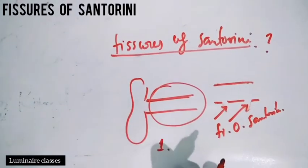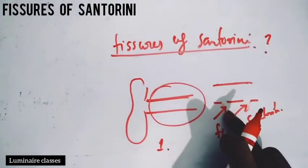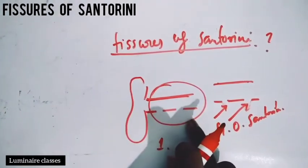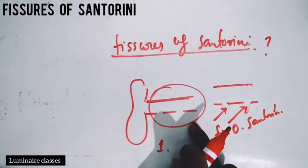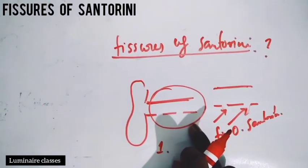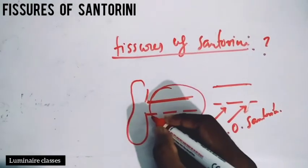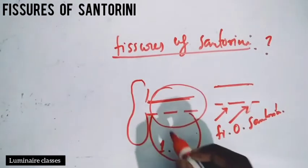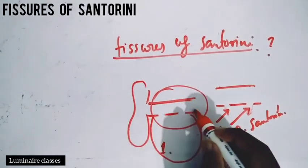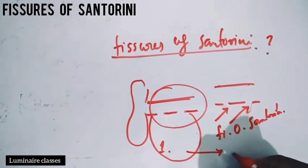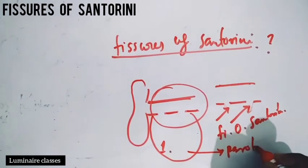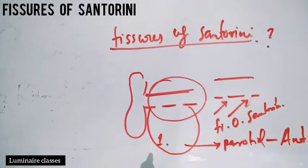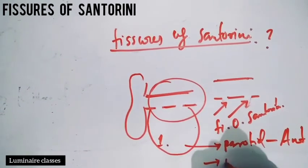As stated, the fissures of Santorini lie in the antero-inferior portion of the cartilaginous part of the external auditory canal. The portion that lies inferior to the cartilaginous part of the external auditory canal is the parotid gland anteriorly, and the mastoid posteriorly.